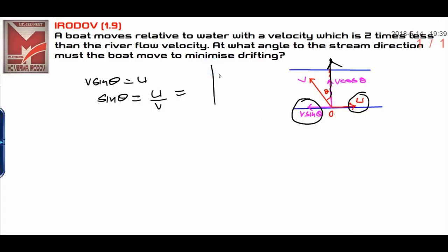According to the question, it is clearly written it is two times less. It means v upon u I can write as two, which means the ratio will be 1 upon 2.